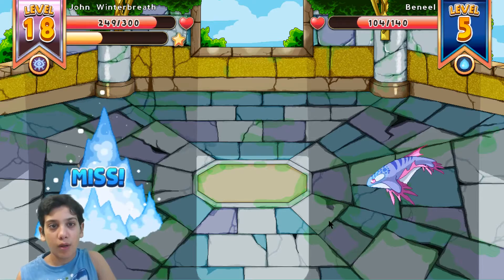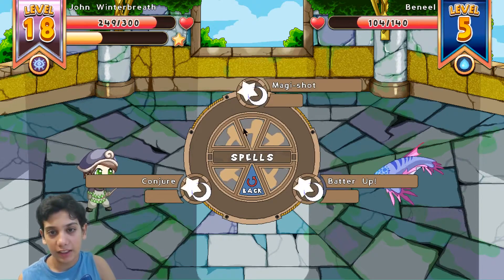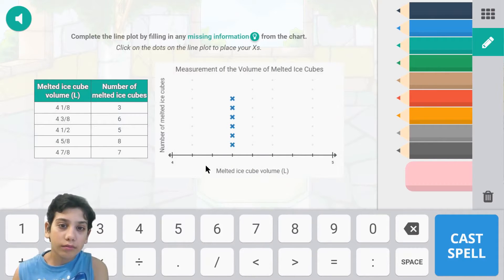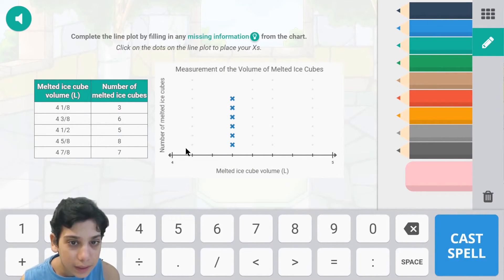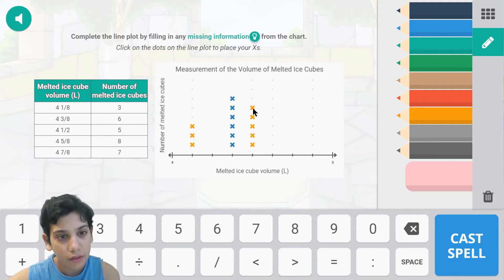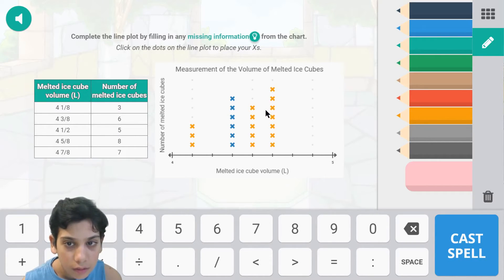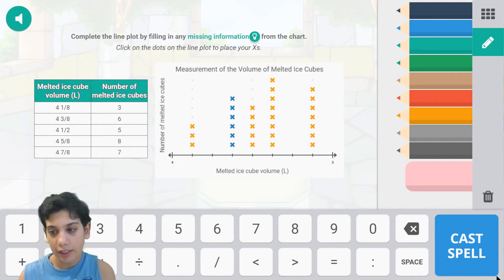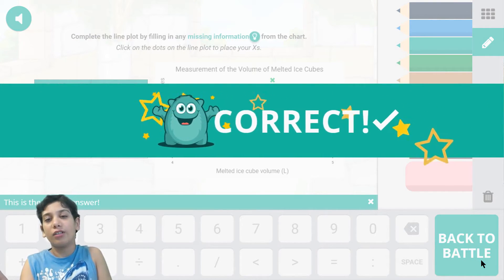So the first one is going to be three ticks, the third one's going to be five ticks, the fourth one is going to be eight ticks which is up there, and the last one's going to be seven ticks right there. Vila correct!